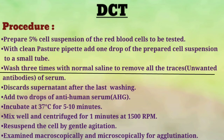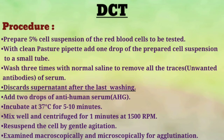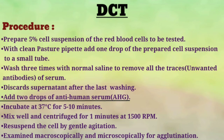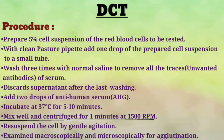Wash three times with normal saline to remove all traces of unwanted antibodies from the serum. The aim of washing is to remove all unwanted antibodies present in the serum, so that chances of error are reduced. After the last washing, discard the supernatant. Then add two drops of anti-human serum to the small tube. Incubate at 37°C for 5 to 10 minutes.